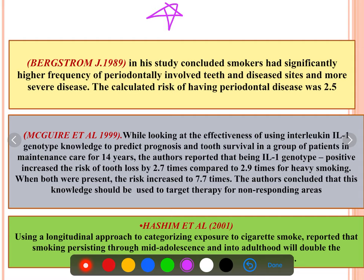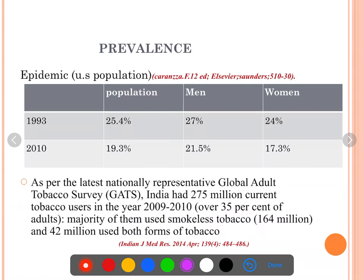There was one person called Bernstam in 1989 who tried to associate periodontitis with smoking and gave an odds ratio of 2.5 as a risk factor. You should know how odds ratios work — more than one versus less than one — and 2.5 is definitely something to consider. Then there's the Mercury et al. study, Hashim et al. study, and the Asthma Thomas study, which comes after some lines on prevalence in current, former, and non-smokers.